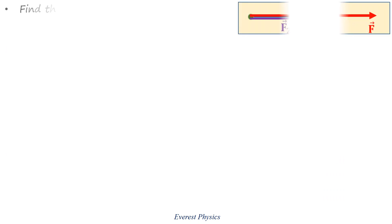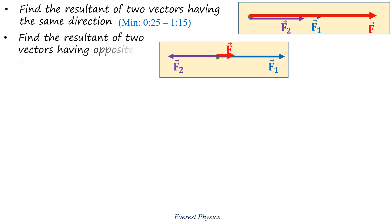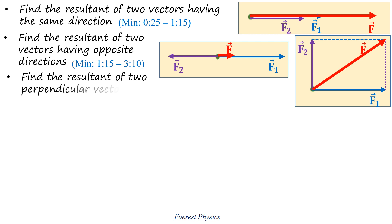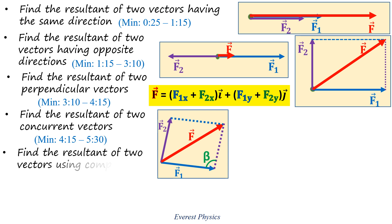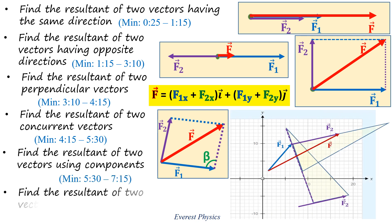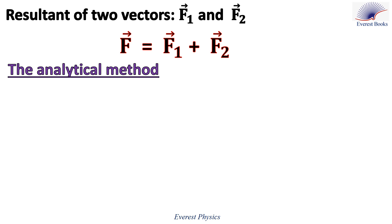Hello, this is Jeanette Androvia. Welcome to Average Physics Academy. In this video, we are going to find the resultant of two vectors having the same direction, find the resultant of two vectors having opposite directions, find the resultant of two perpendicular vectors, find the resultant of two concurrent vectors, find the resultant of two vectors using components, and find the resultant of two vectors using a scale diagram. We are going to find the resultant of two vectors F1 and F2 by different methods. The resultant F is the vector sum of the vectors F1 and F2. Let's start with the analytical method and take some examples.